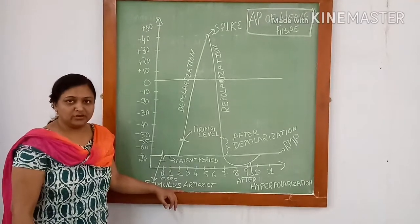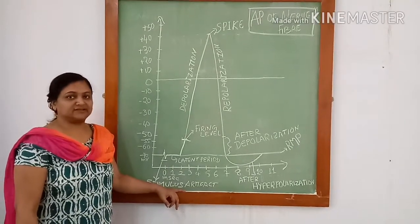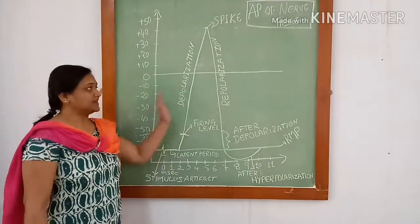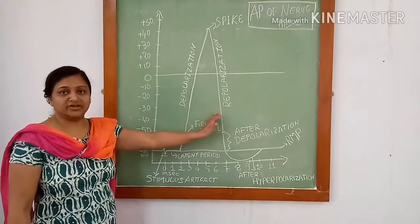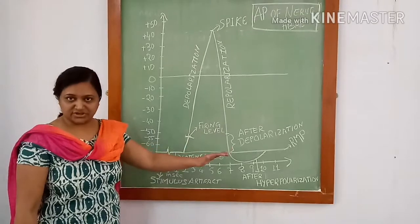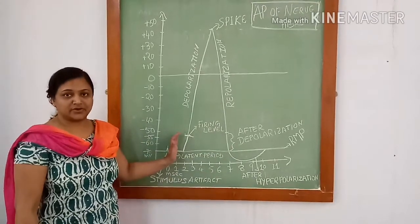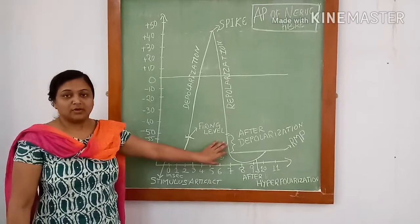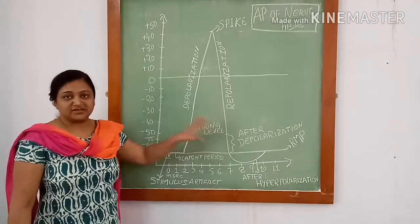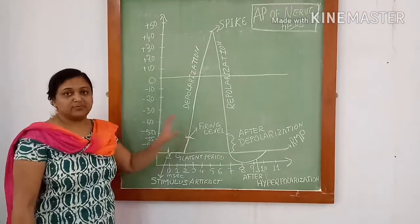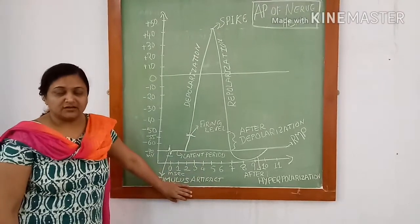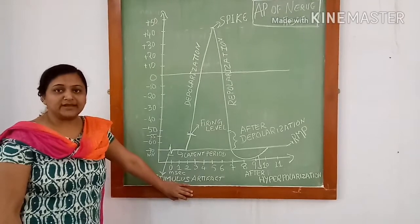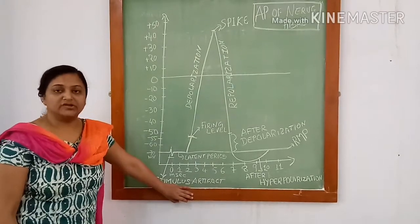Good morning all. Today we will discuss action potential in nerve fiber. Before discussing action potential, we should know what is resting membrane potential. It is the membrane potential of nerve fiber at rest. Action potential is the brief sequence of changes which occurs in any excitable tissue on application of a threshold stimulus.